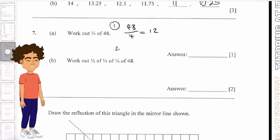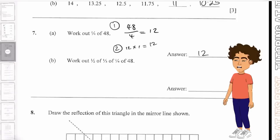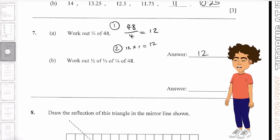If the numerator was different, you would then have 12 times whatever the numerator is, and then you would get your answer. And then for part B, it states work out 1/2 of 1/3 of 1/4 of 48.